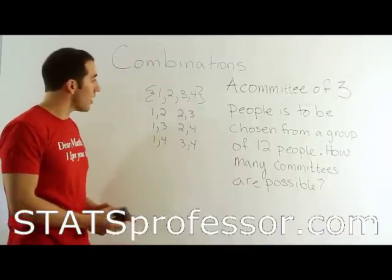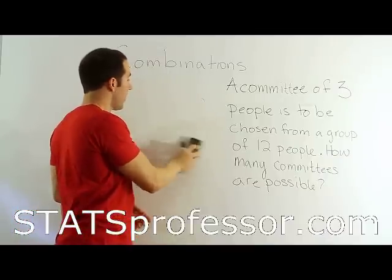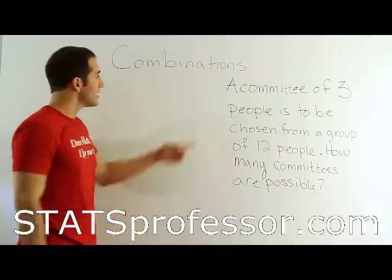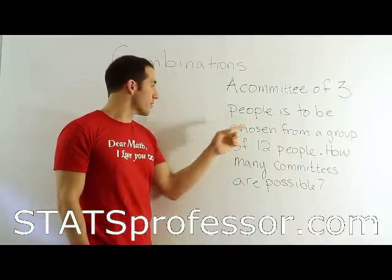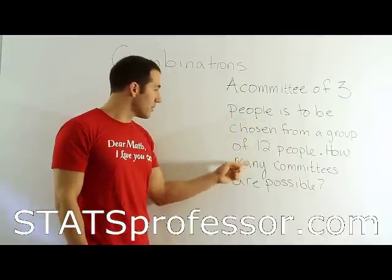Well, when I look at the problem, it says, how many committees are possible in that last sentence. It says a committee of three people is to be chosen from a group of twelve people. How many committees are possible?